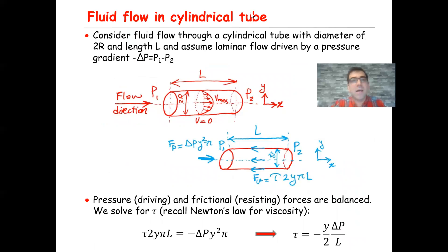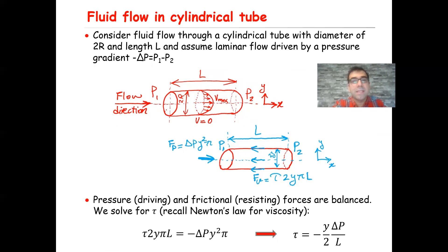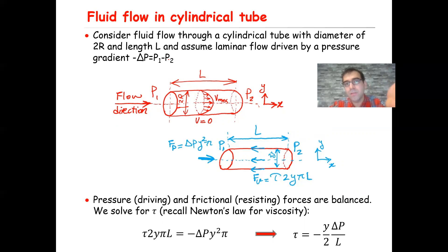Now we want to talk about fluid flow in a cylindrical tube. Consider fluid flow through a cylindrical tube with diameter 2R. The length of this tube is equal to L, and we assume laminar flow driven by a pressure gradient P1 minus P2. The flow direction is from P1 to P2, and we write minus delta P equal to P1 minus P2, since delta P is normally defined as P2 minus P1.